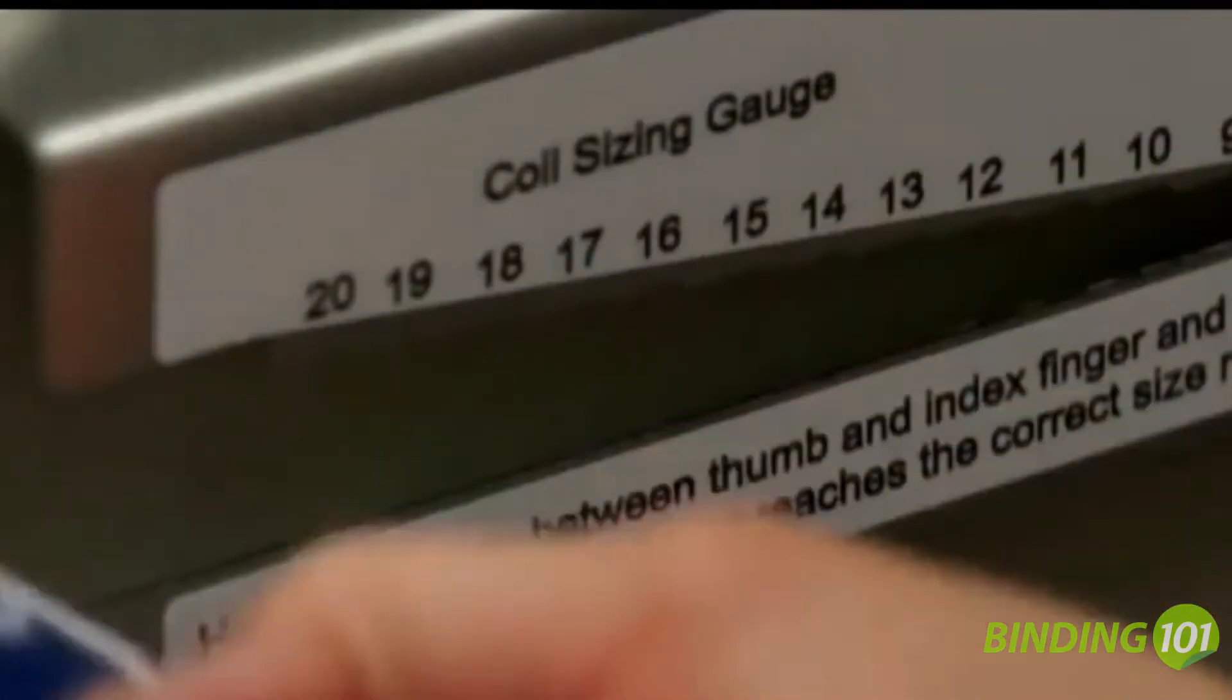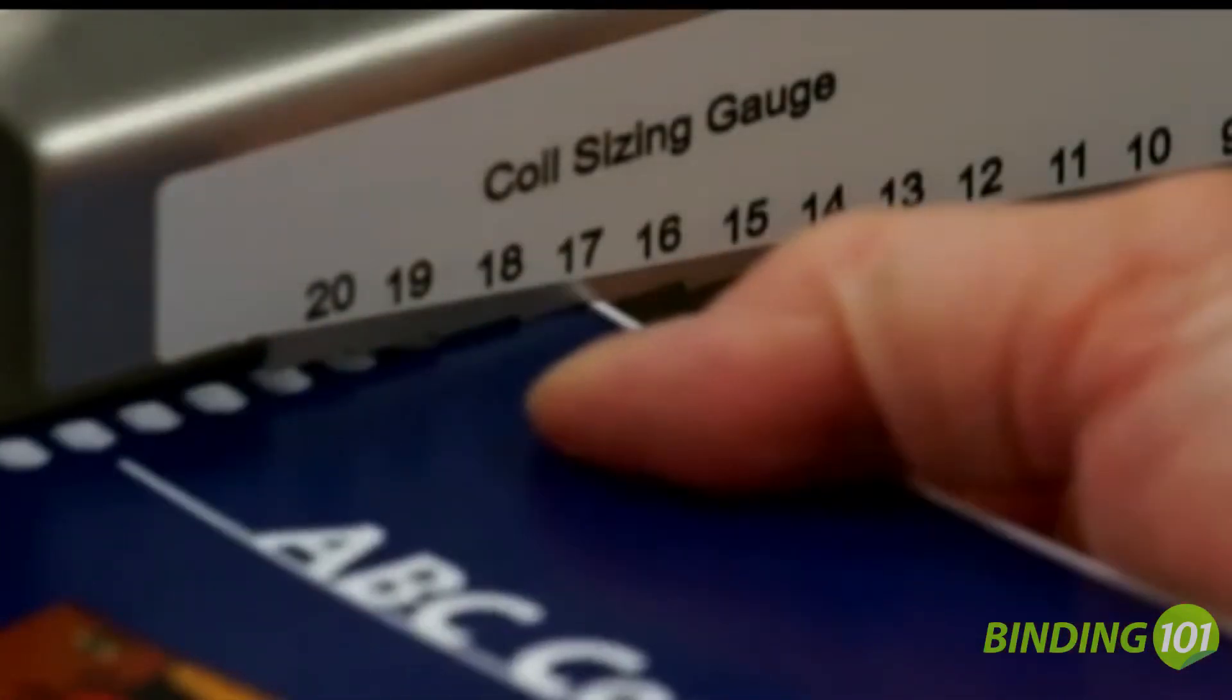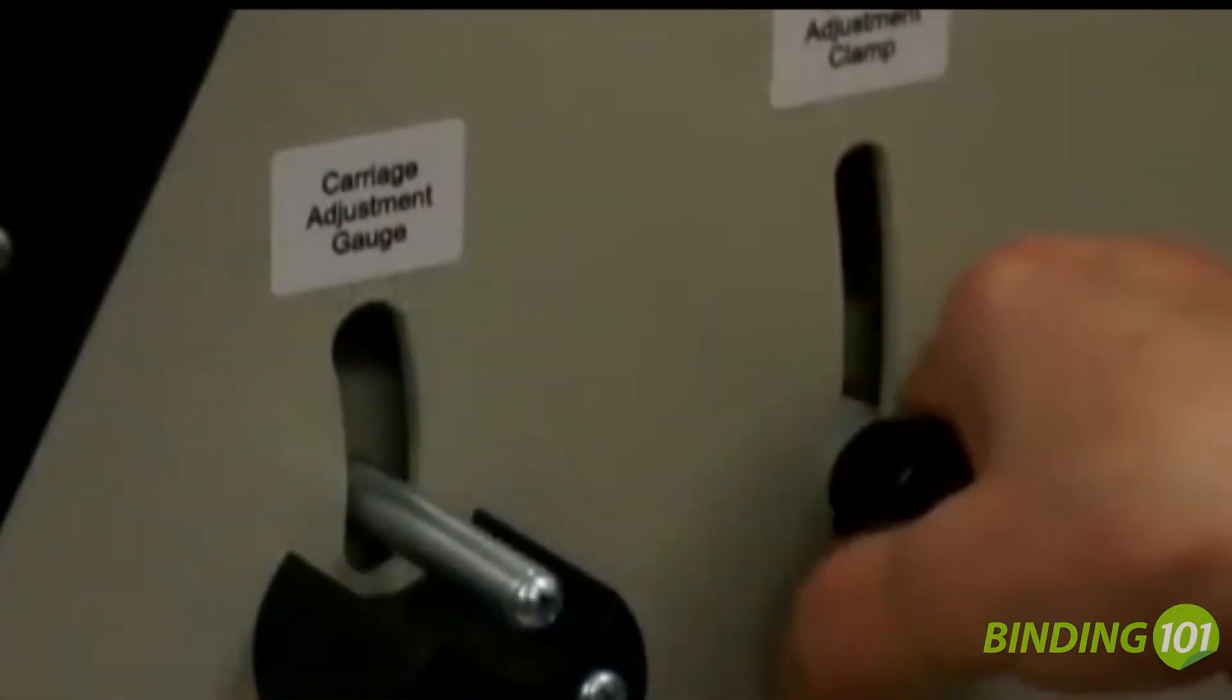The spine formers create a curve to the book's binding edge that duplicates the curve of the plastic spiral. The Coilmatic has a built-in coil sizing gauge to help the operator confirm the diameter of coil required in relation to the book's thickness.